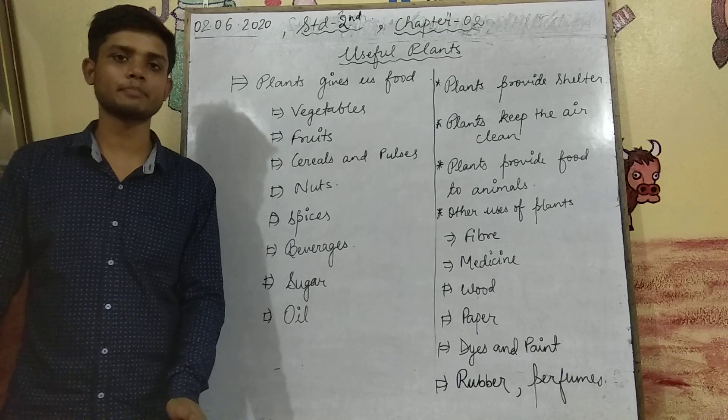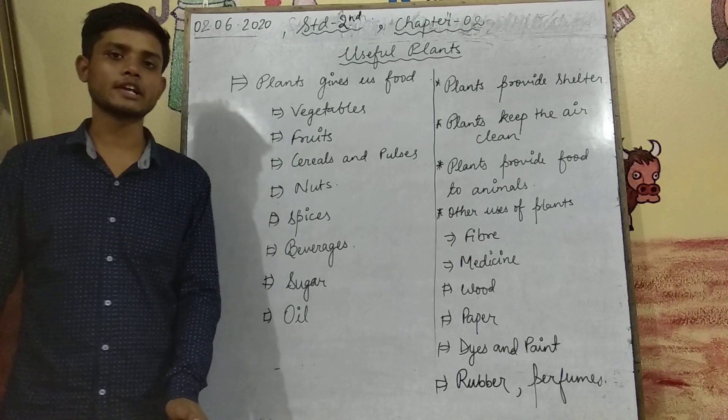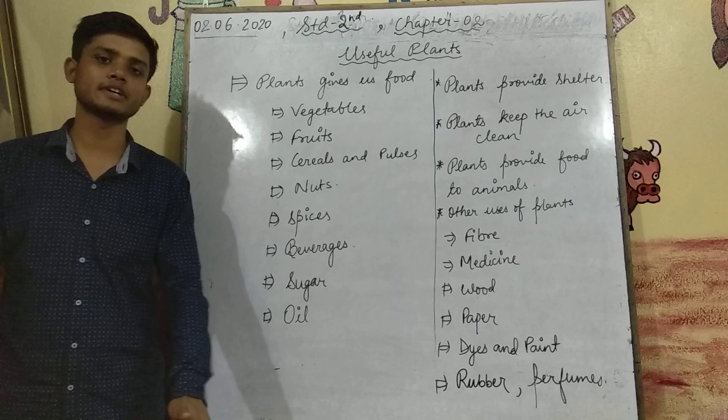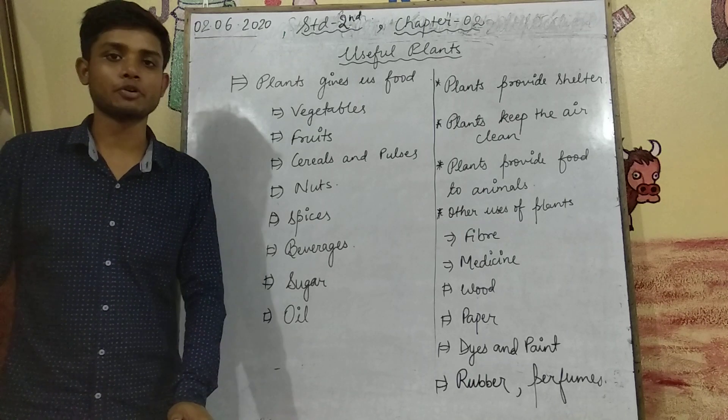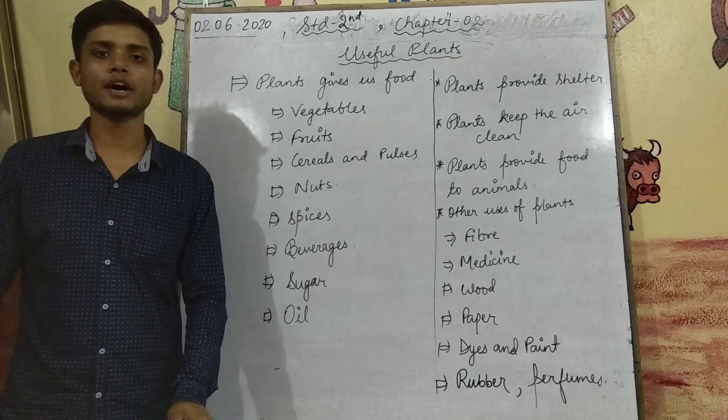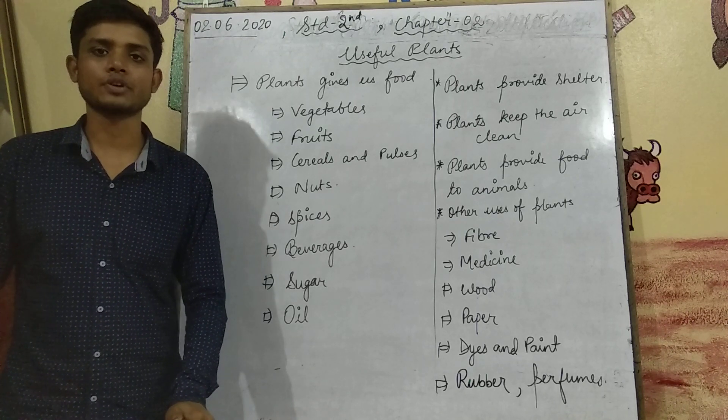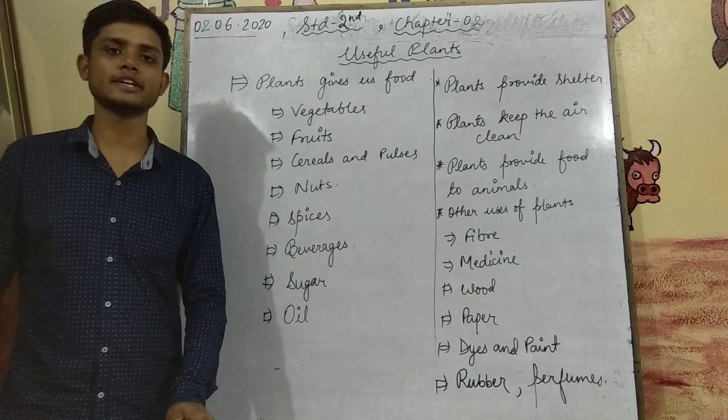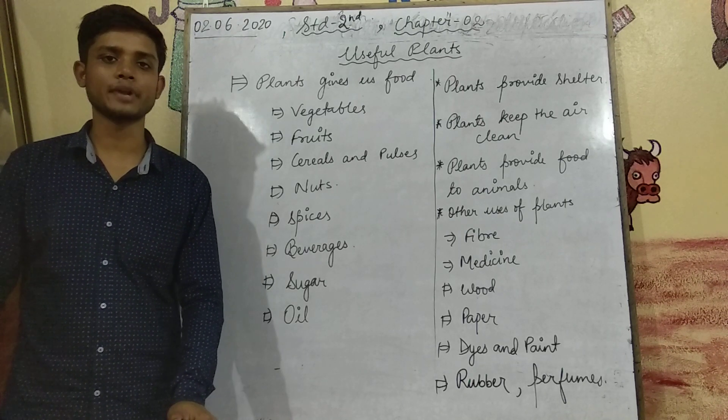Now, cereals and pulses — cereals like wheat, maize, and rice — these we use in our food.